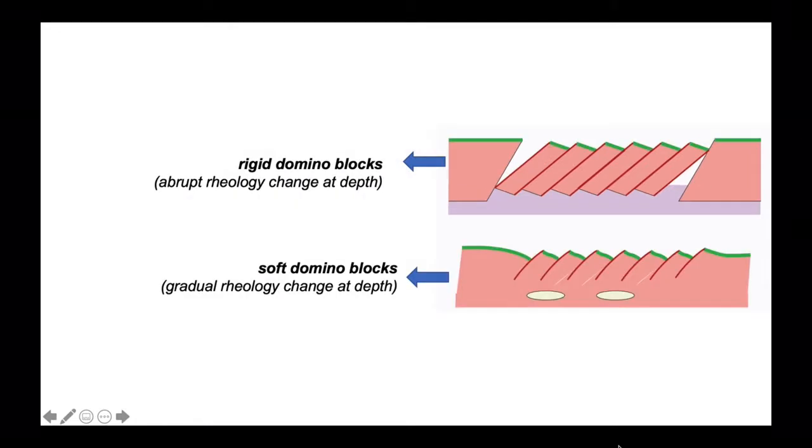You can view domino blocks very rigidly, as in the top diagram here, which implies an abrupt change in rheology down through the lithosphere from brittle behavior in the surface blocks to some flowable substrate at depth.